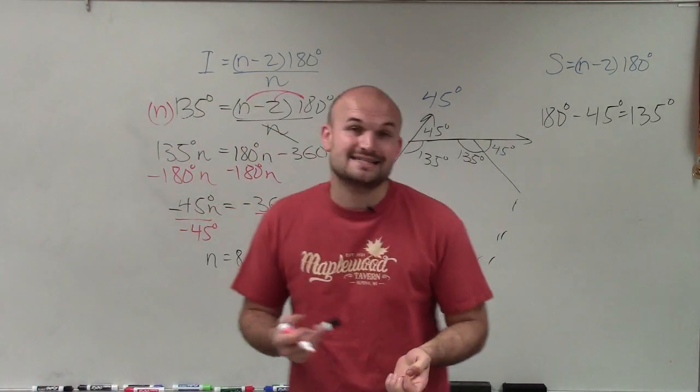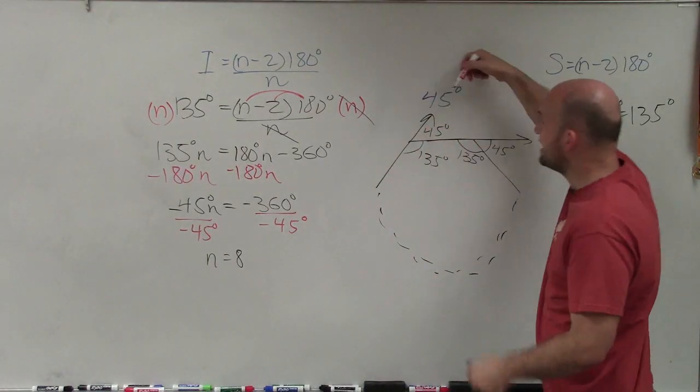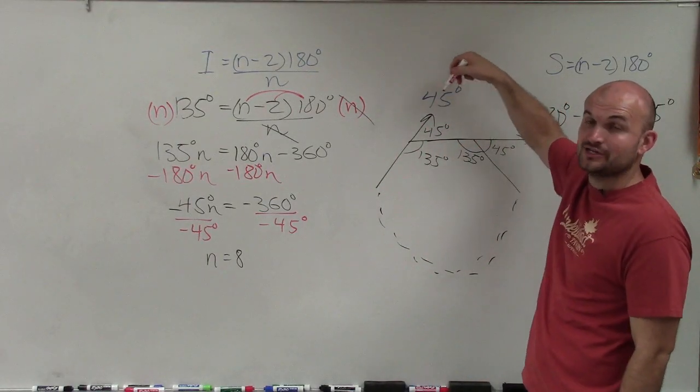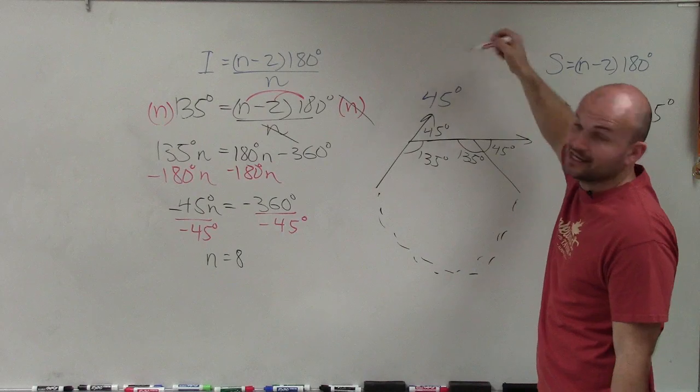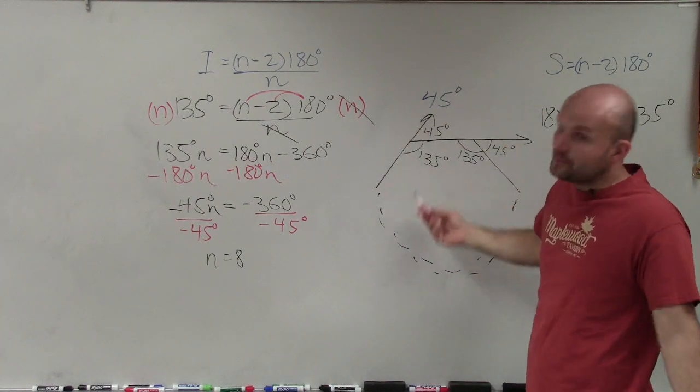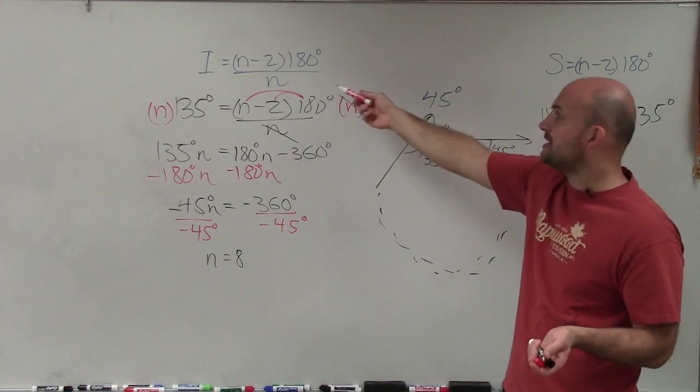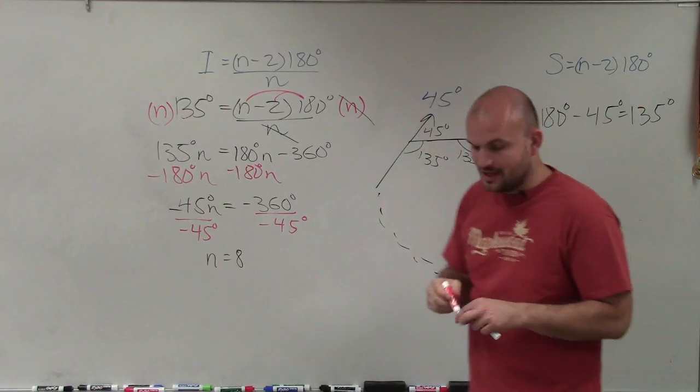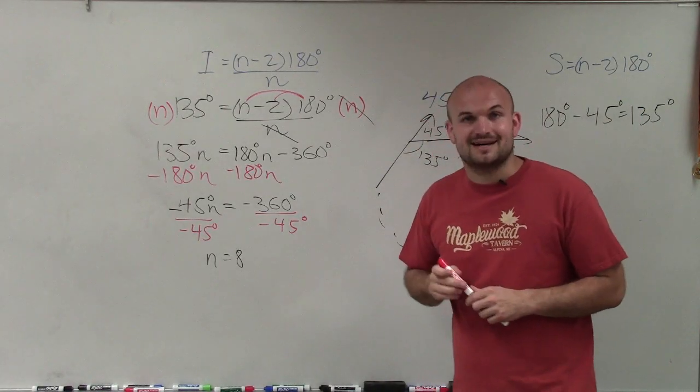So therefore, the number of sides is 8, which is an octagon, when one exterior angle of the regular octagon is 45 degrees. Because therefore, the interior angle is 135 degrees, which we prove by using our formula is going to produce an octagon. Thanks.